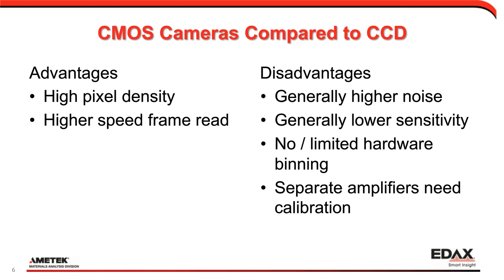CMOS cameras have no or very limited hardware binning. CCDs can bin up to 16×16, combining 256 pixels and reading them at once, but CMOS cameras typically cannot approach that. Additionally, because each CMOS pixel has its own amplifier, subtle intensity variations across the field of view can occur if those amplifiers are not well-matched. Manufacturers are working on calibration routines to address this, but it is something to be aware of currently — it is not a concern with CCD cameras.